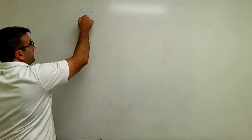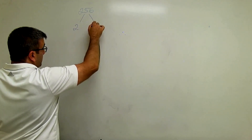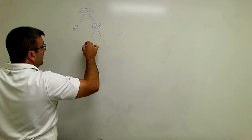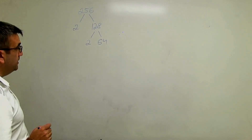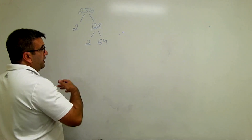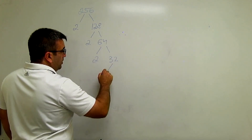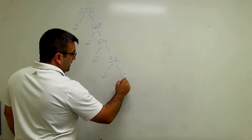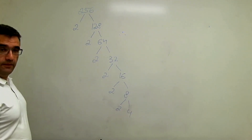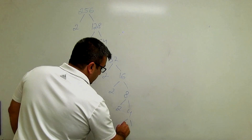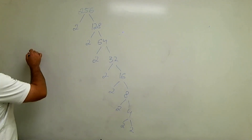We start with prime factorization. So it will be 2 and 128, 2 and 64. Unless you know the answer right away, you can do factor trees. So it will be 2 and 32, 2 and 16, 2 and 8, 2 and 4, and 2 and 2. So we have 1, 2, 3, 4, 5, 6, 7, 8 factors of 2.